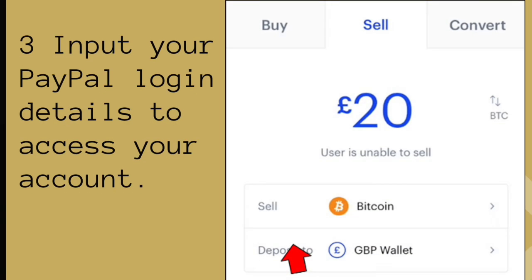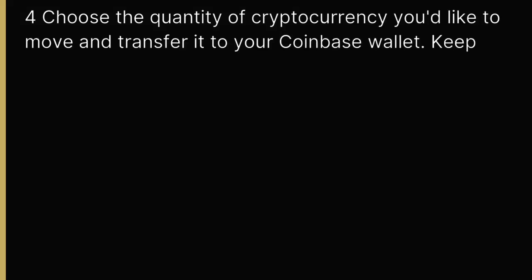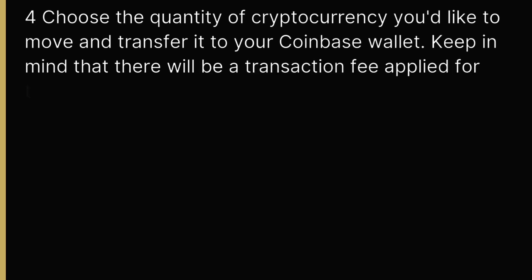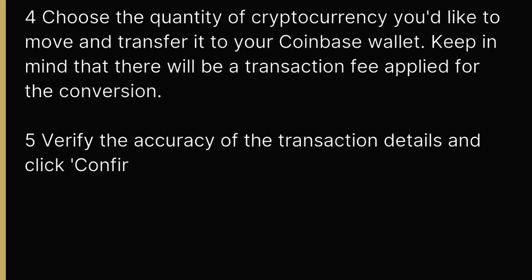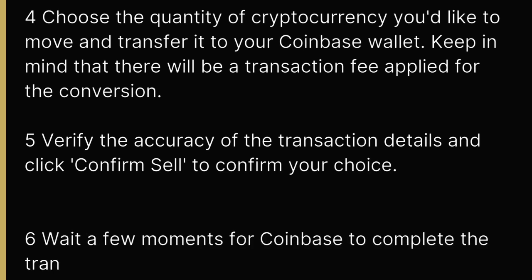Navigate to the Deposit To field and choose your PayPal account. Choose the quantity of cryptocurrency you'd like to move and transfer it to your Coinbase wallet. Verify the accuracy of the transaction details and click Confirm Sell to confirm your choice.